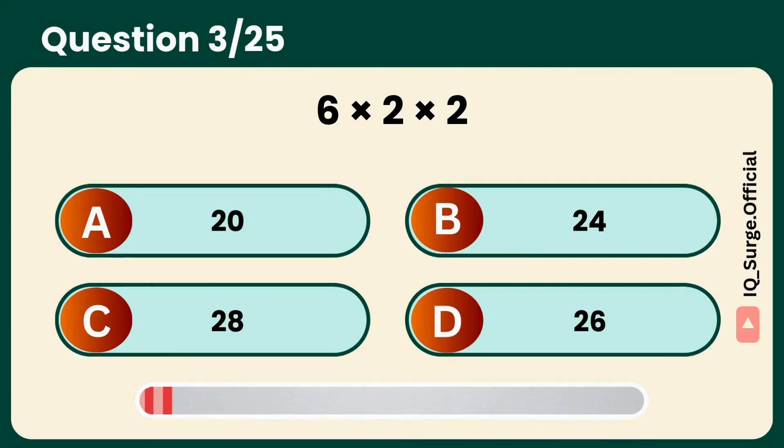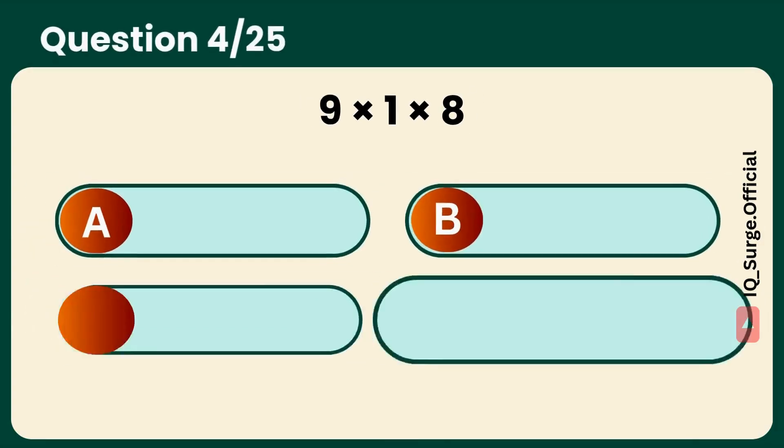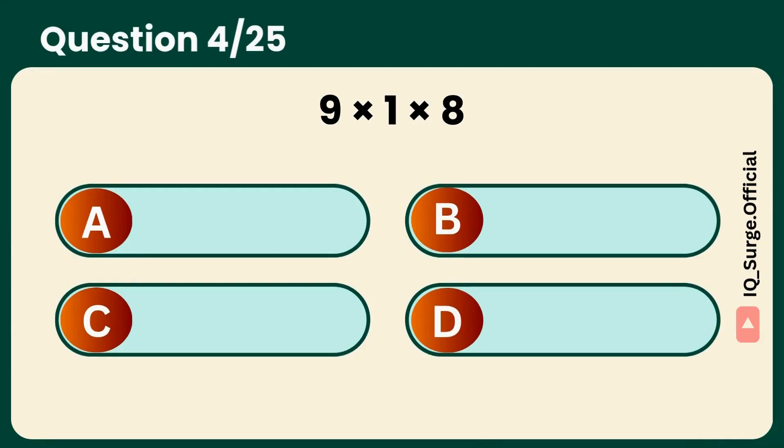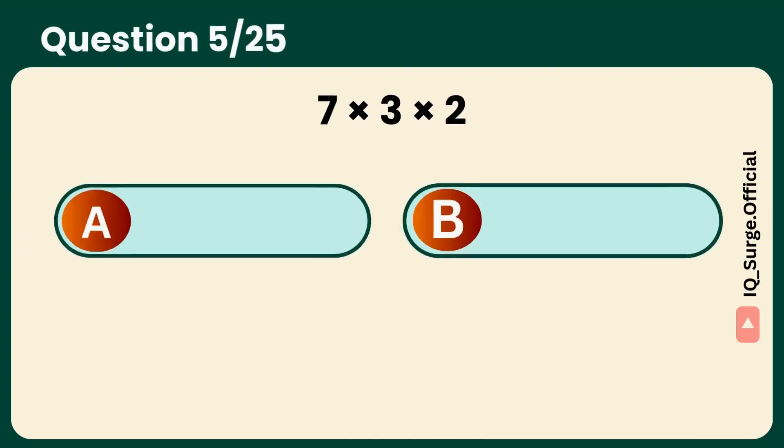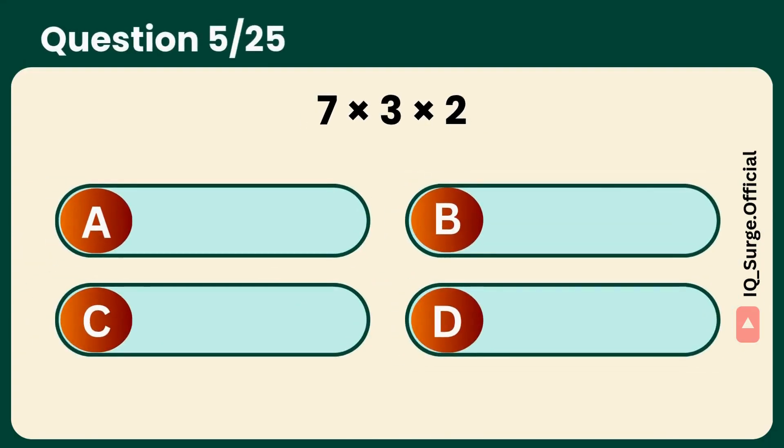Solve it before I do. Answer: B, 24. What is 9 times 1 times 8? One number makes this simple. Answer: A, 72.